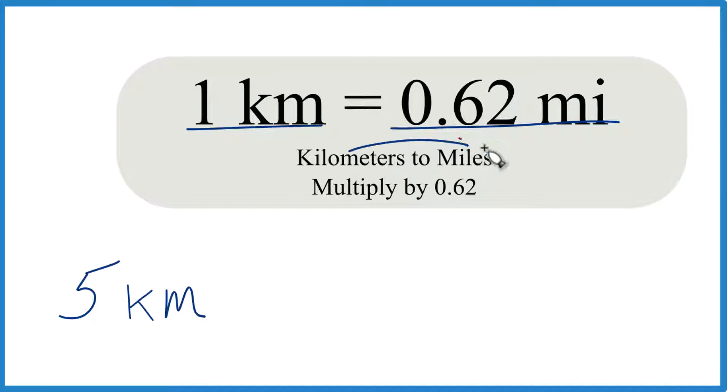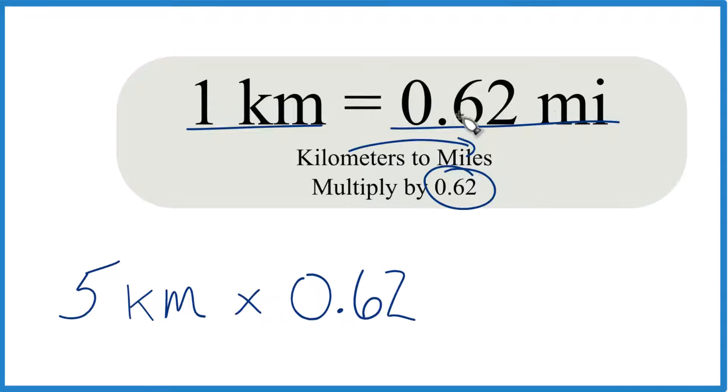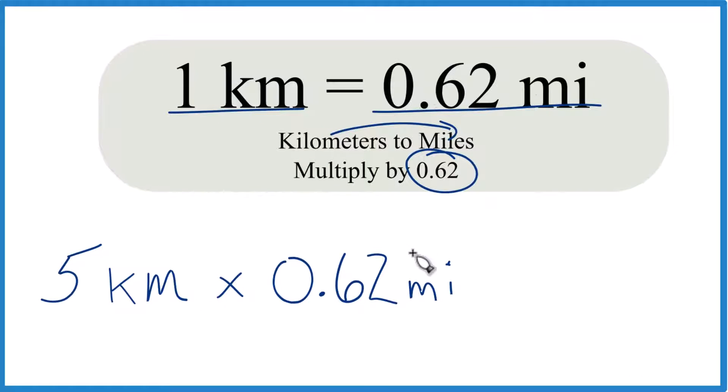So kilometers to miles, we multiply by 0.62. So we take our 5 kilometers multiplied by 0.62, and there's 0.62 miles in one kilometer, so it's miles over kilometers.